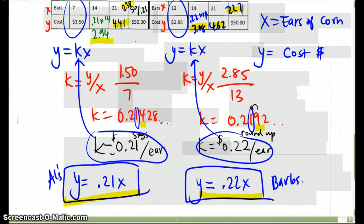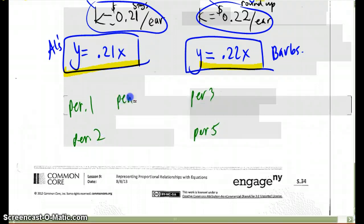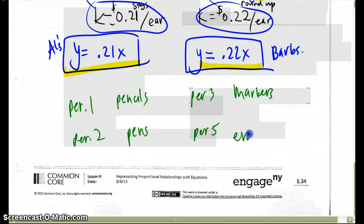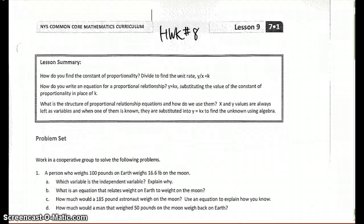Go ahead and please make sure that you write down your period's secret code. We've got pencils, pens, markers, and erasers. That is your secret code. Please work as much as you can on this worksheet for homework. See you tomorrow.